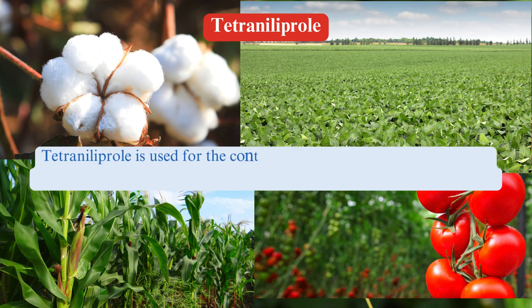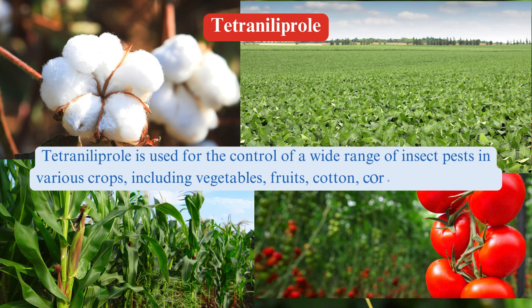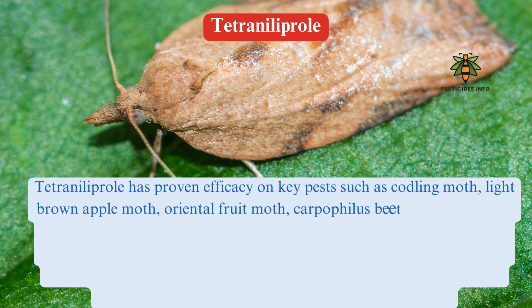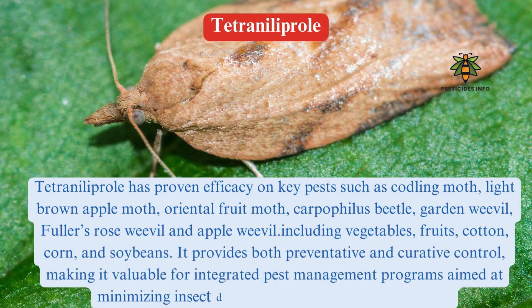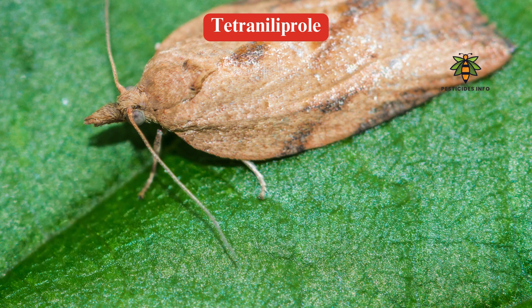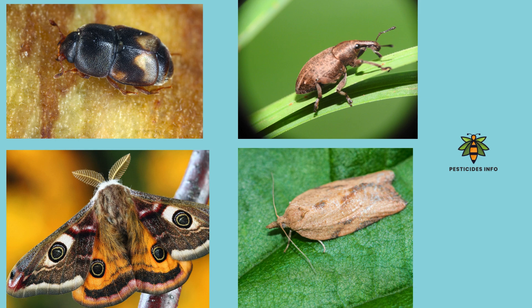Uses. Tetraniliprol is used for the control of a wide range of insect pests in various crops. It has proven efficacy on key pests such as codling moth, light brown apple moth, oriental fruit moth, carpophilus beetle, garden weevil, fuller's rose weevil, and apple weevil.